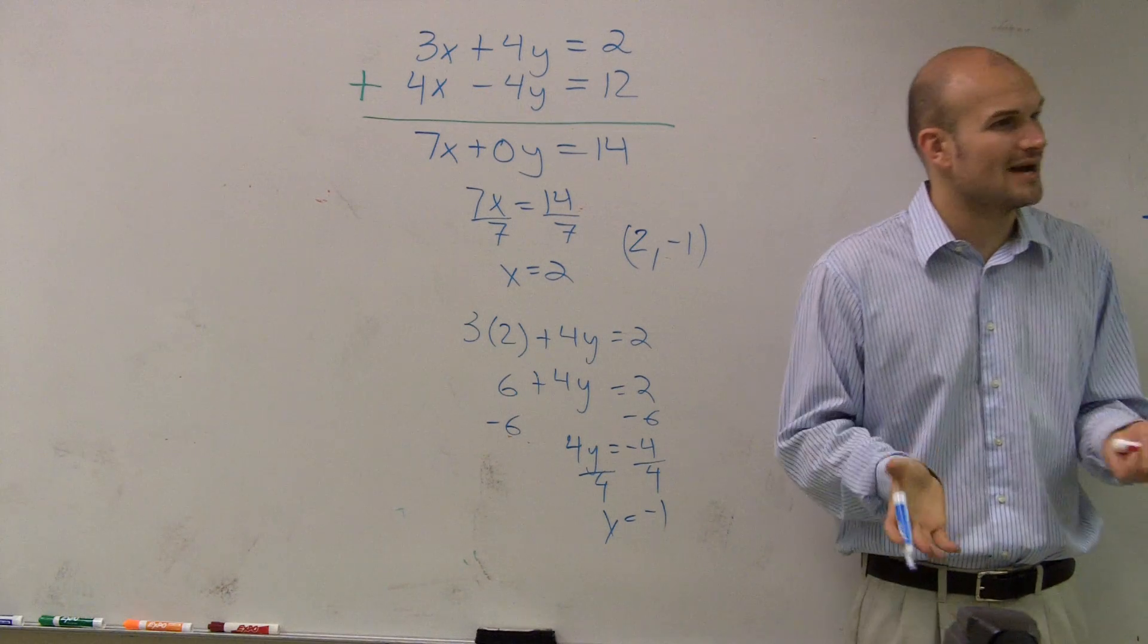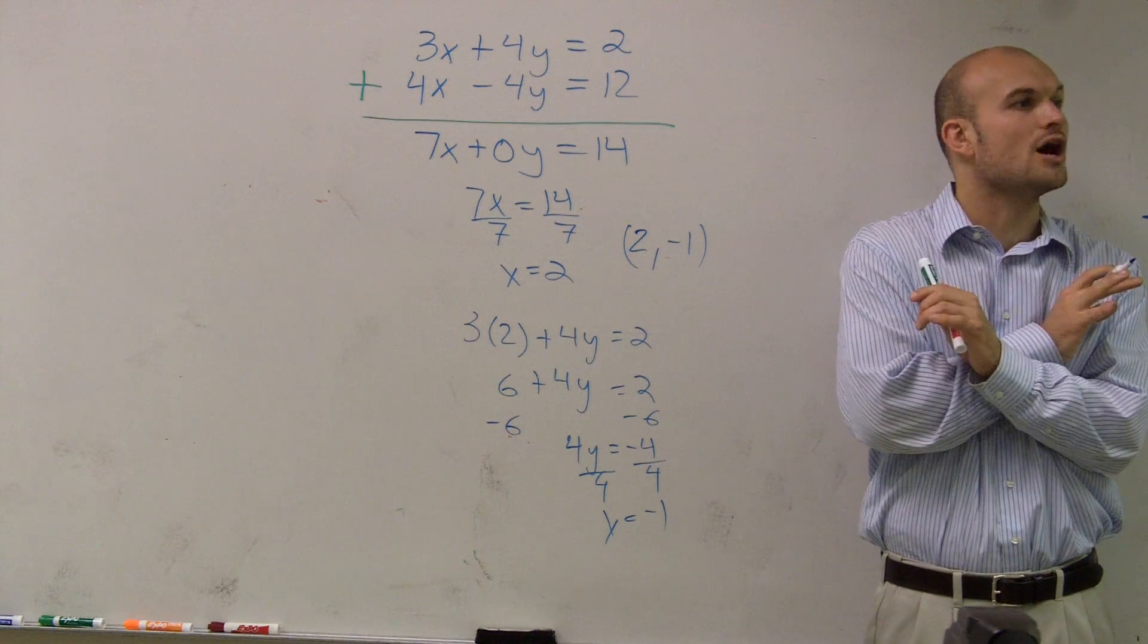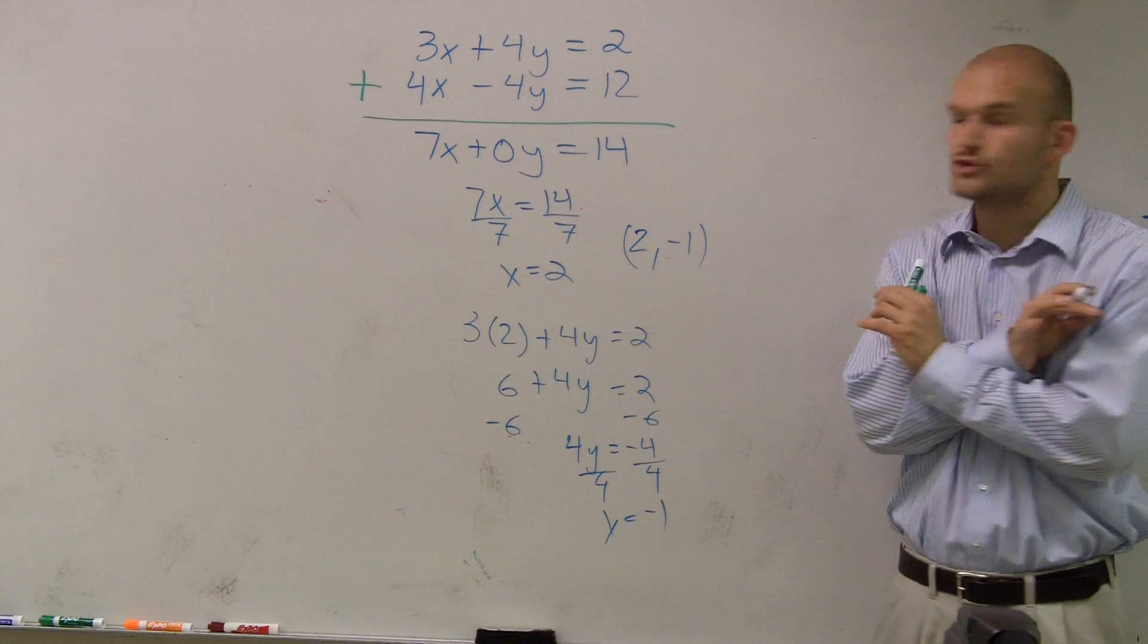And if I was to think about this graphically, that's where those two lines would cross on a graph. It would be the point 2 comma negative 1.